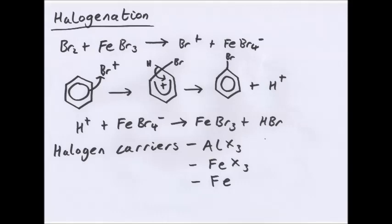Halogenation is very simple, except you've got something called a halogen carrier. For example, you can have FeBr3, or as you can see, you've got AlX3, FeX3, or in some cases, Fe itself.